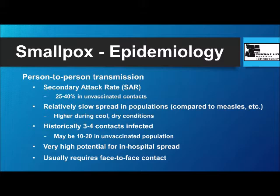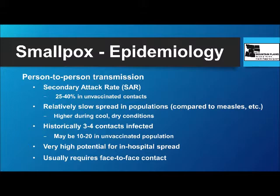The person-to-person transmission rate in unvaccinated contacts has a secondary attack rate in the neighborhood of 25 to 40%. It's slower spread than diseases like measles, but in the past, contacts spread were only three to four in vaccinated and maybe 10 to 20 in unvaccinated populations. This is a real concern now, given the lack of immunity that our population in general has.